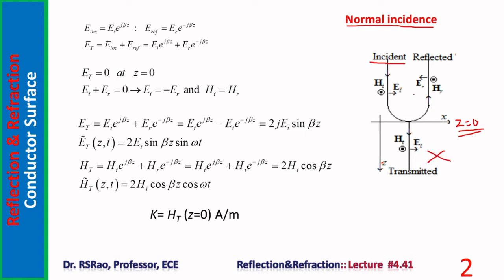To find the total field in front of the reflecting surface, the electric field in the incident wave is E_i e^(+jβz) — the plus sign is because the wave travels in the negative z direction. The electric field in the reflected wave is E_r e^(-jβz), traveling in the positive z direction. The total field is E_incidence plus E_reflected, giving E_i e^(jβz) plus E_r e^(-jβz).